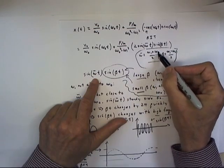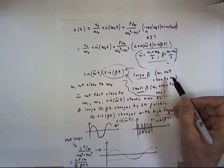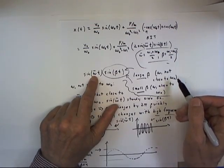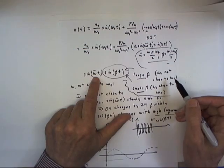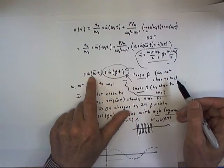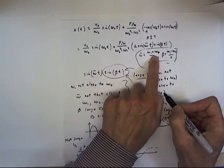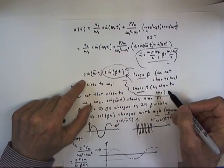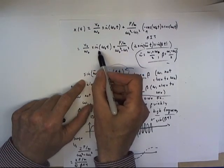Omega-bar is just the average of omega-1 and omega-naught. If beta is large — meaning omega-1 is not all that close to omega-naught — then our average frequency omega-bar is not going to be all that close to omega-naught, and we're going to have a significant effect on the period of motion. For a small beta, omega-1 is close to omega-naught, so the average is going to be close to the natural frequency of the oscillator, and sine of omega-bar t is going to be close to sine of omega-naught t.